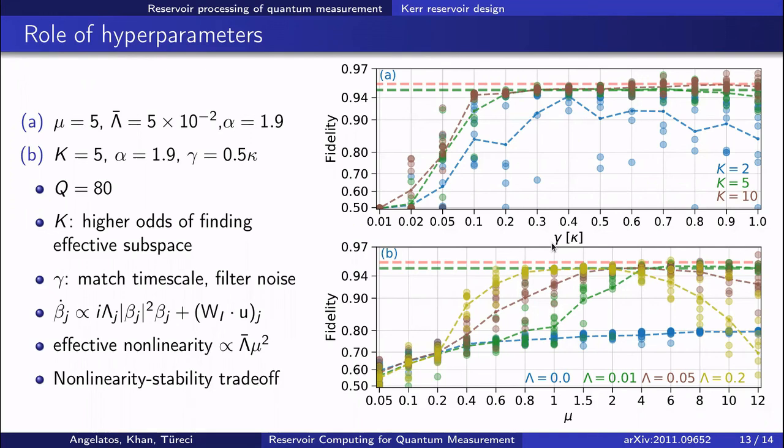It's important that this reservoir timescale be roughly matched to that of the input signal kappa, so the reservoir responds to the input signal instead of the far faster noise on top of it. This is why the performance starts to fall off at faster reservoir timescales.